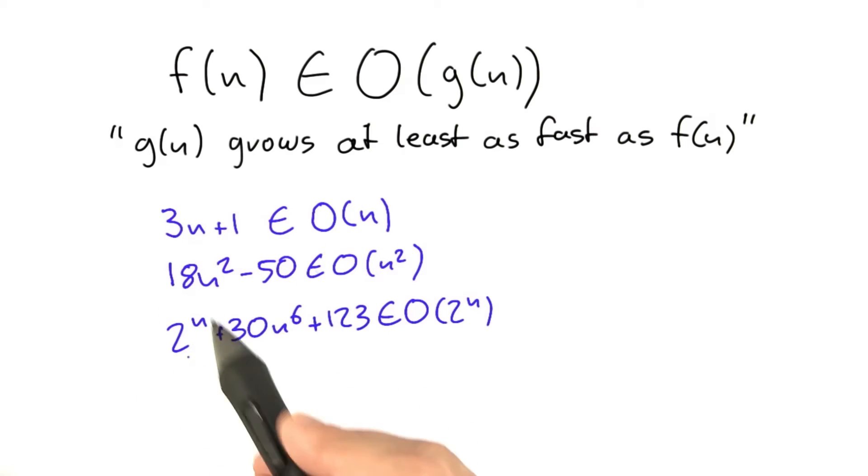Now very similar here if you have 2 to the power of n plus 30 n to the power of 6 plus 123 that would be in O of 2 to the power of n. We do not care about the constant and those two terms here they both depend on n but 2 to the n outgrows the 30 n to the power of 6 and since we add those two terms here, 2 to the power of n is really just the fastest growing part.